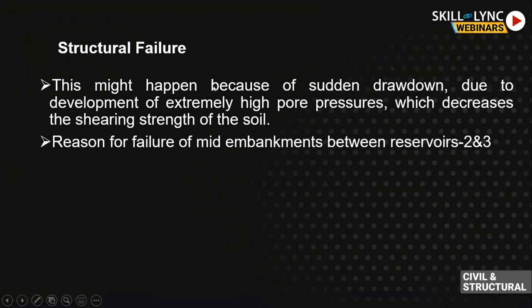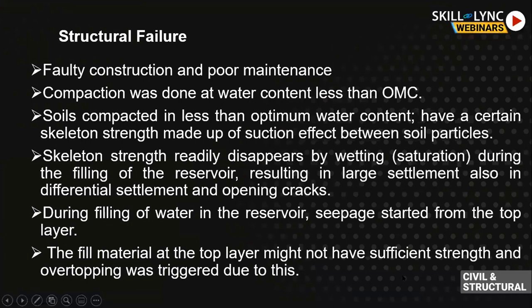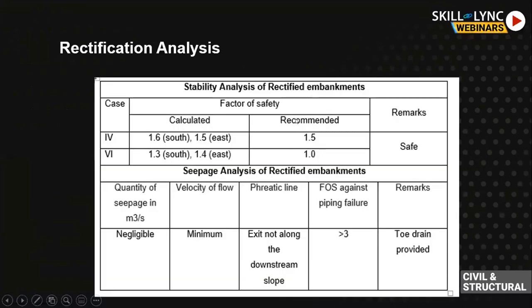Structural failure occurred due to sudden drawdown — extremely high pore water pressure developed, reducing shear strength, causing failure of the mid-embankment between Reservoirs 2 and 3. Multiple aspects contributed: faulty construction, poor maintenance, and poor compaction. The fill material at the top layer did not gain sufficient strength, which also helped trigger the overtopping.